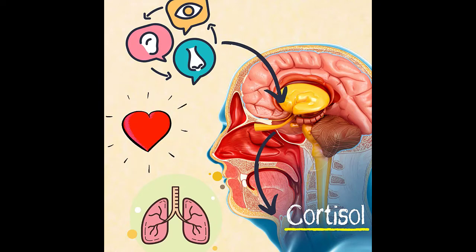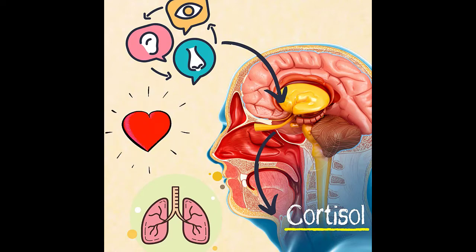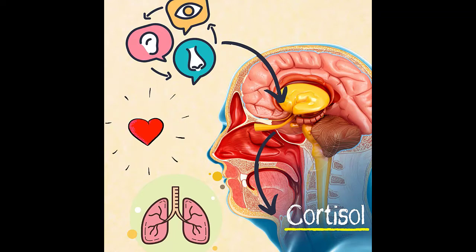Our amygdala sees, hears, or smells something, says 'danger,' and through a series of steps we release cortisol as well as lots of other hormones. What cortisol does, along with these other hormones, is increase our heart rate — because we're going to fight or flee and we need increased blood flow to our muscles so we can run or fight. We need to get oxygen to our muscles because oxygen equals energy. It also increases our breathing to get more oxygen in the body. That allows us to do that fight or flight, which is beneficial. That increased adrenaline and cortisol helps us make a very quick reaction.